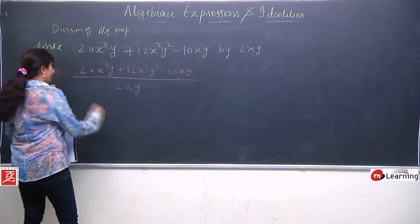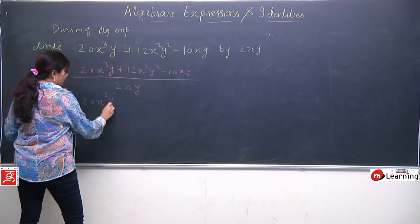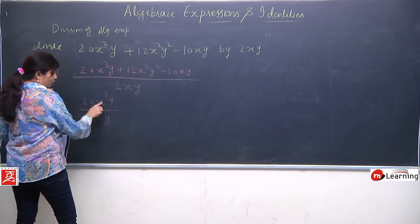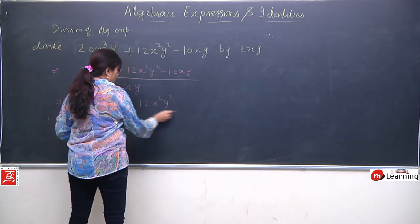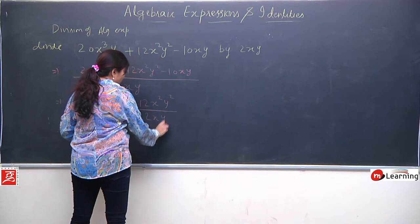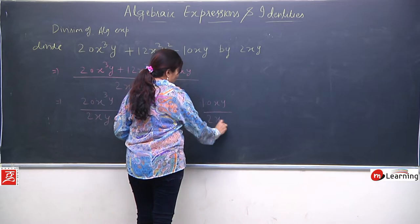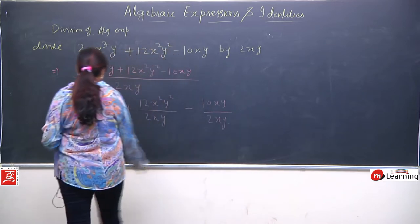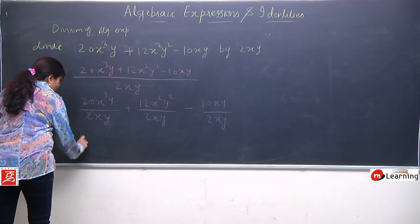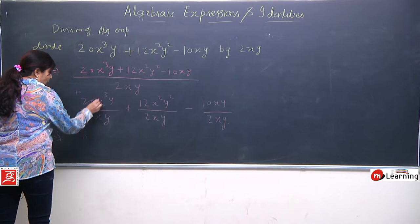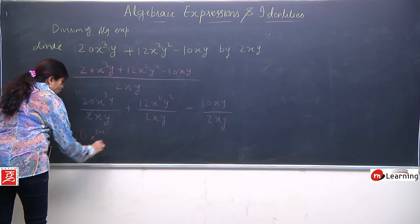20x³y + 12x²y² - 10xy upon 2xy. Ab kya karenge — separation method lagayenge. Term separate kar di: 20x³y upon 2xy, plus 12x²y² upon 2xy, minus 10xy upon 2xy. Number will solve with number. 2 tens are 20. Base same hai x ke liye, to power kya hogi? Subtract ho jaayegi.